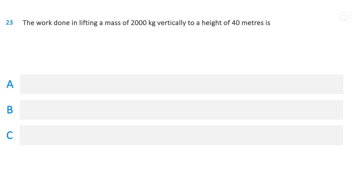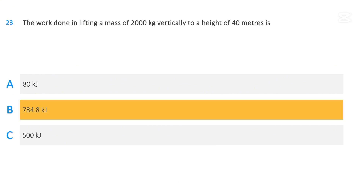The work done in lifting a mass of 2000 kilograms vertically to a height of 40 meters is: 80 kilojoules; 784.8 kilojoules; or 500 kilojoules. The correct answer is 784.8 kilojoules.